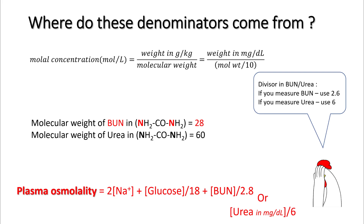Another source of confusion is that some labs measure BUN while others measure urea, and your divisors differ accordingly. If you have BUN, divide by 2.8; if you have urea, divide by 6.